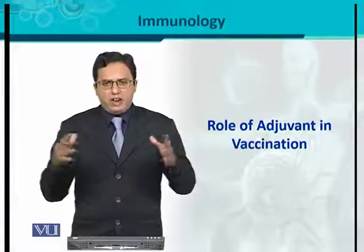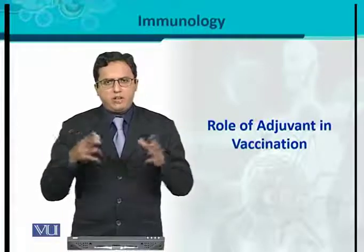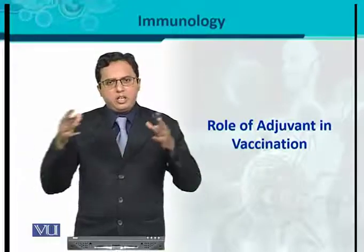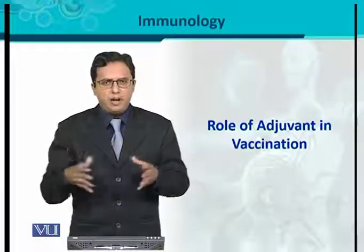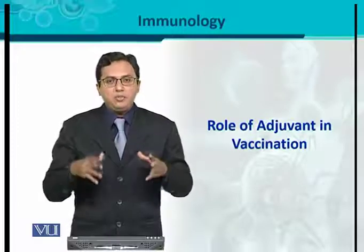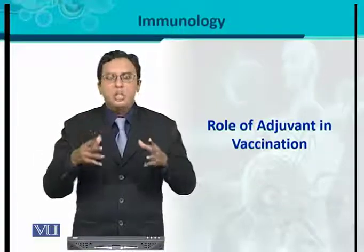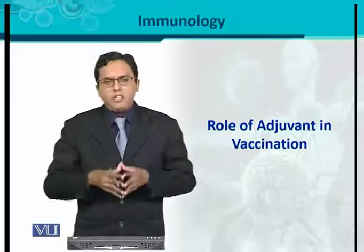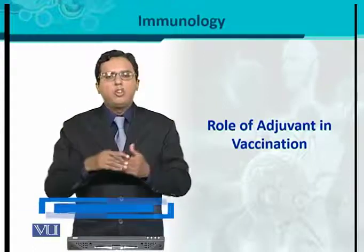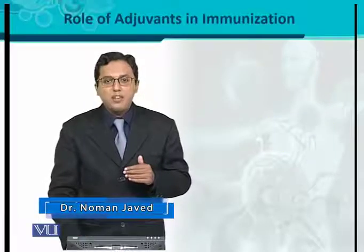Role of adjuvants in vaccination. The vaccination process is a very effective process for providing protection against common and damaging pathogens. In order to increase the efficiency or efficacy of vaccines, we also use different compounds, substances, or chemicals which have the ability to increase the efficacy of those vaccines. Such compounds are called adjuvants.